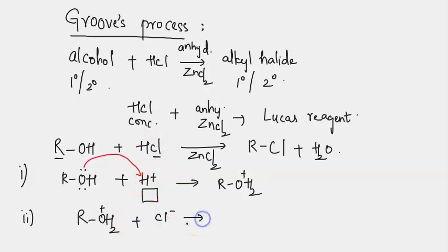The attack of Cl- will take place onto the ROH2+ which results in the formation of RCl plus the remaining part would be H2O. This mechanism follows SN2 mechanism, nucleophilic substitution bimolecular reaction where the nucleophile is added onto the positively charged particle.